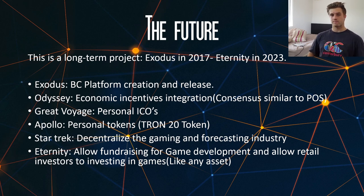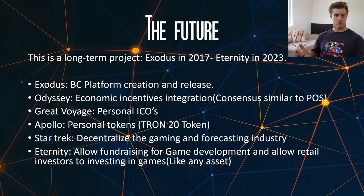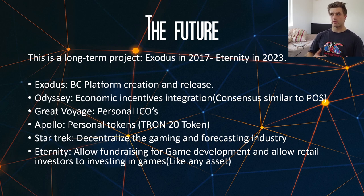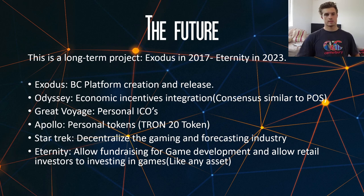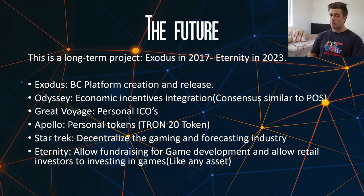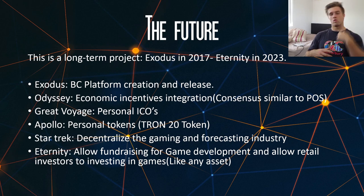Number four is Apollo. This one's linked to the last one — it's basically to do with releasing your own personal tokens and the creation and integration of the TRON20 token. Number five is Star Trek, really tailored towards decentralizing the gaming and forecasting industry. Stage six is Eternity, basically tailored towards the gaming industry itself — allowing fundraising for game development and allowing retail investors to invest in games just like any other asset or ICO.